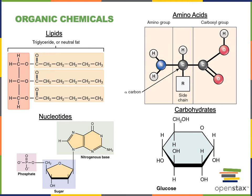Adipocytes store triglycerides as an energy storage molecule that can then be released and broken down in order to release energy for the cell to use for its work. Now below the lipid category on the bottom left here we can see nucleotides. Nucleotides are monomers that will be linked together in order to form polymers known as nucleic acids. Each nucleotide monomer contains a phosphate region that has negative charges, so a nucleotide is considered an organic ion.